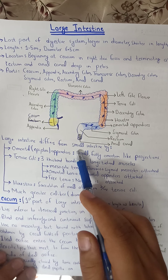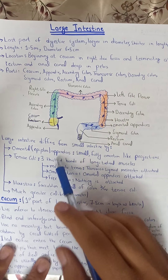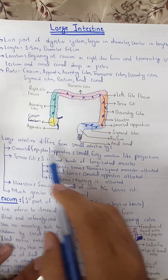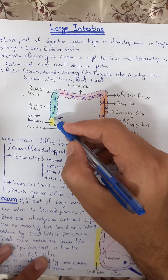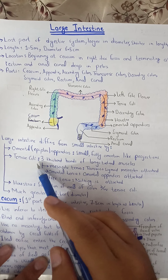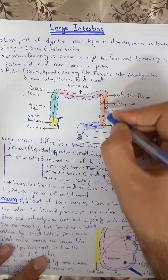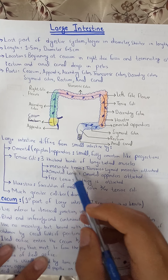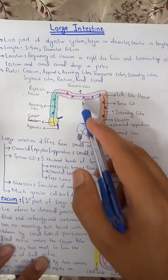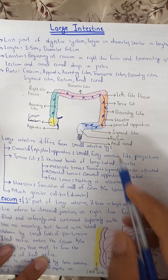The large intestine differs from the small intestine in several important points. First are the omental or epiploic appendices — small fatty, omentum-like projections seen in the diagram. Second is the teniae coli — three thick bands of longitudinal muscles. There are three teniae: the mesocolic teniae associated with the transverse and sigmoid mesocolon, the omental teniae, and the free teniae.